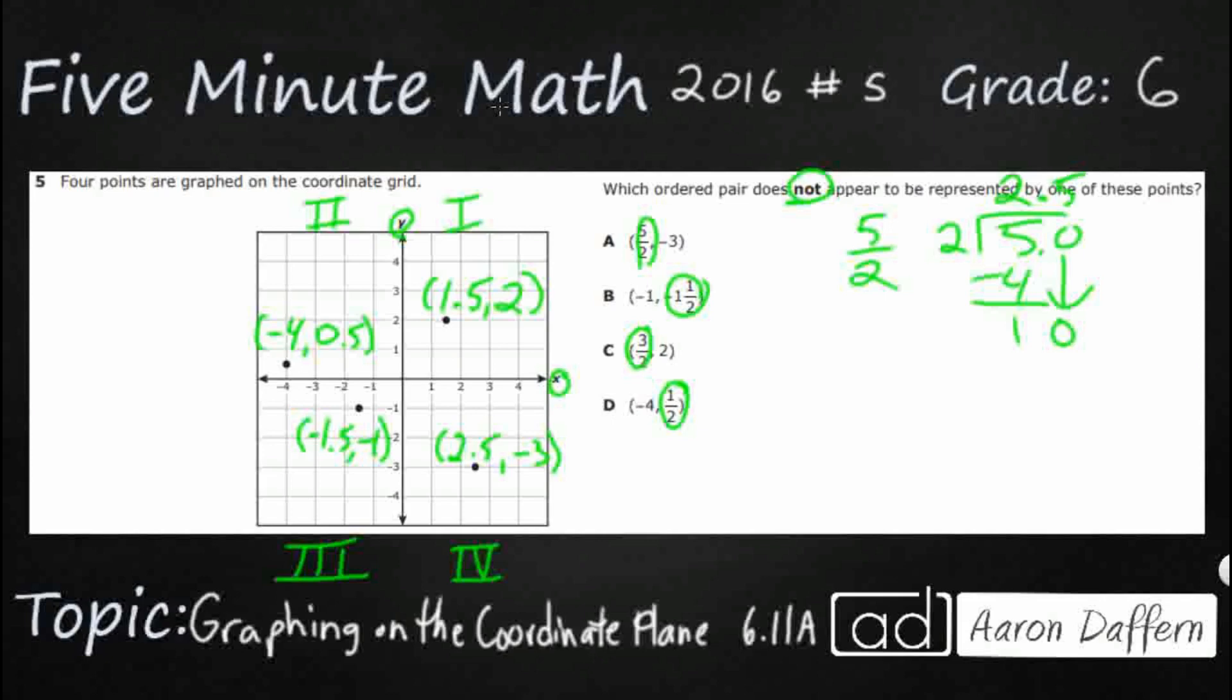So really this is 2.5 comma negative three. So do we have a 2.5 comma negative three? It's got it right there. So that means we found it. Wrong answer. We want the one that does not show up.